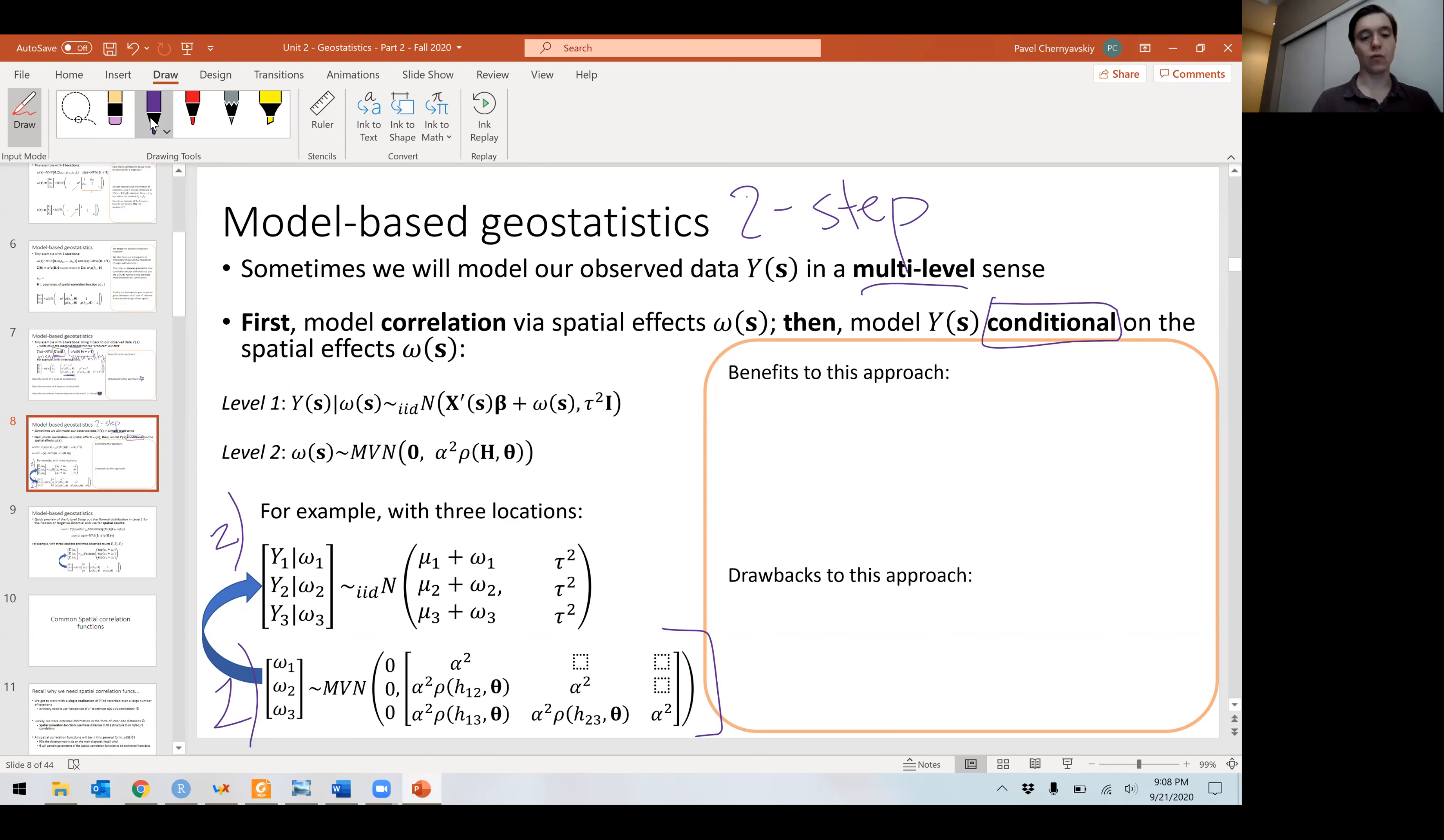So first, we model just the spatial effects. You will notice that this process is mean zero and you will notice that there isn't a nugget here. There's no nugget because we're only modeling the pure spatially structured component. But then we modify the means with these estimates right here and we introduce just measurement error.